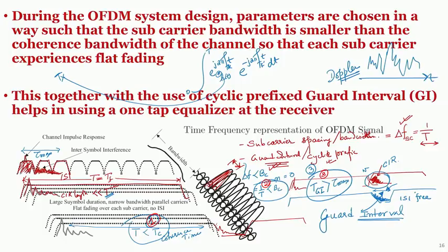In the previous lecture, we were discussing resilience towards multipath and some parameters of interest. We identified three important parameters. The first is that the time interval for the OFDM symbol should be less than the coherence time. Equivalently, 1/T — the subcarrier bandwidth — must be less than the coherence bandwidth B_C. This is point number 2: the subcarrier spacing delta_F must be less than the coherence bandwidth.